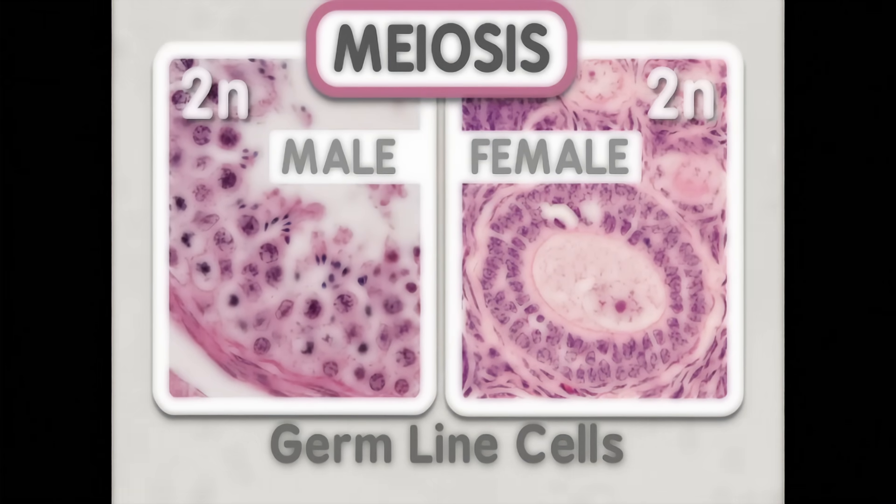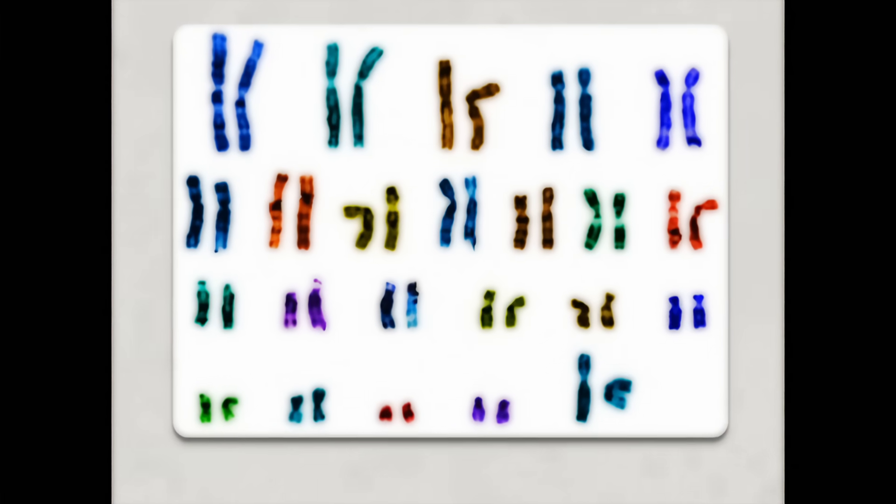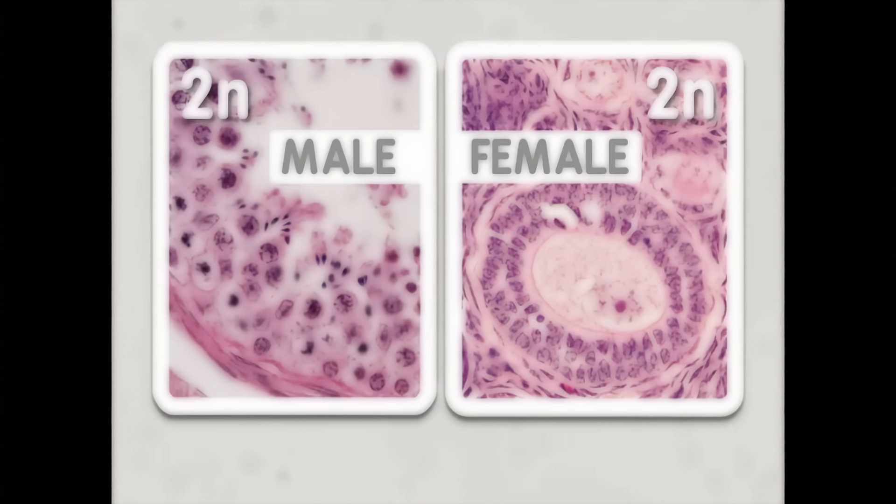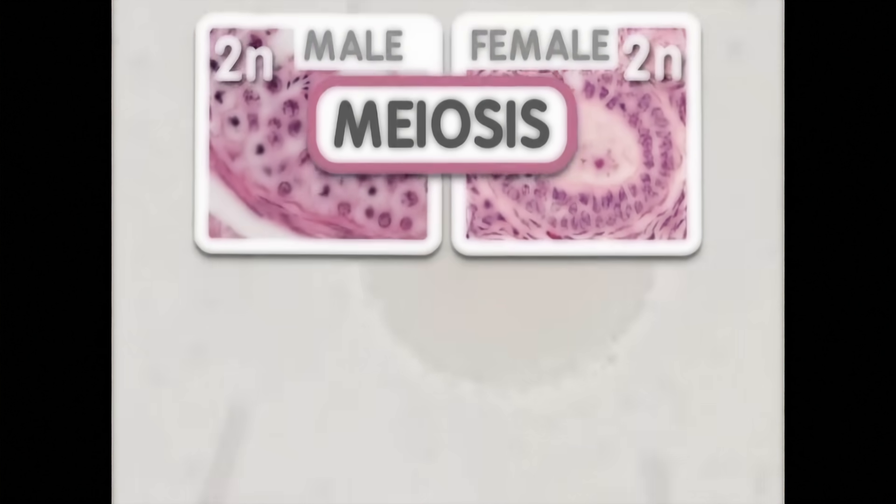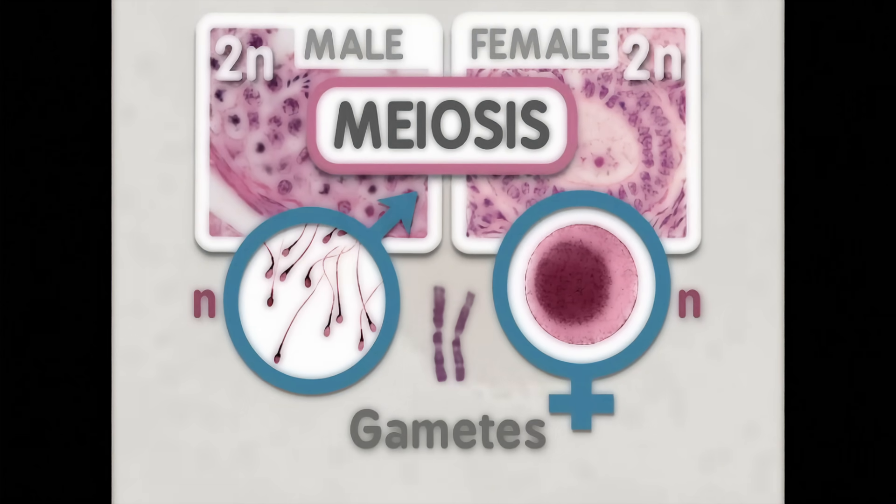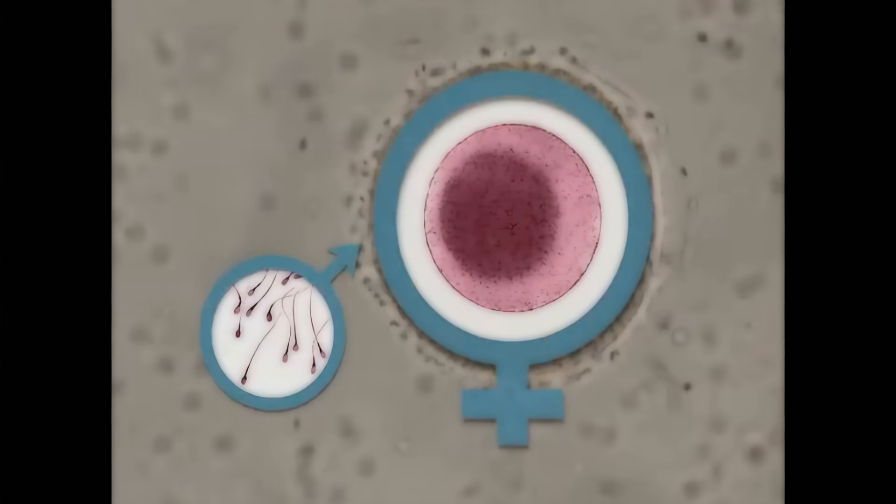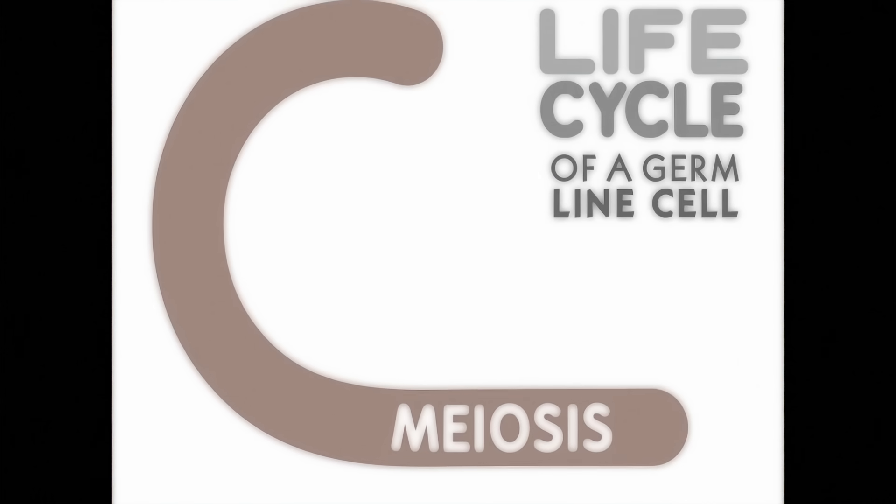The cells that undergo meiosis to produce the gametes are called germline cells. In diploid organisms, germline cells have two copies of each chromosome. Germline cells undergo meiosis to produce haploid gametes which only have one copy of each chromosome. These haploid gametes fuse to form a diploid embryo that grows into the adult. Meiosis is just one step in the life cycle of a germline cell.